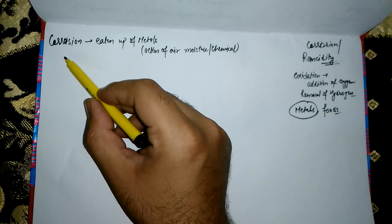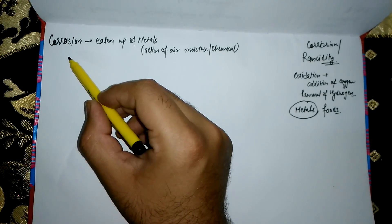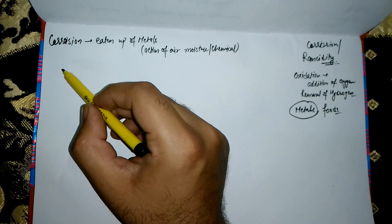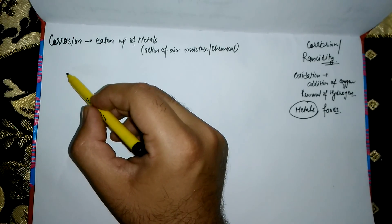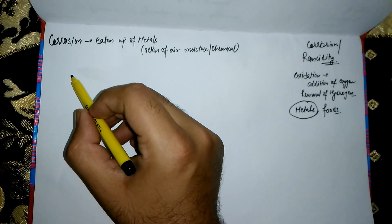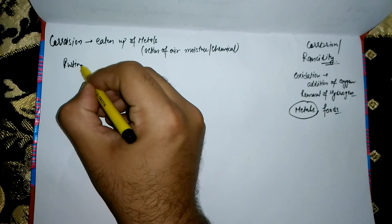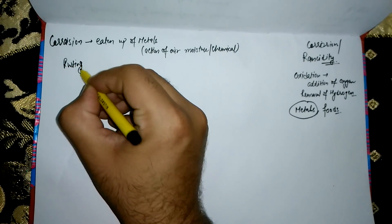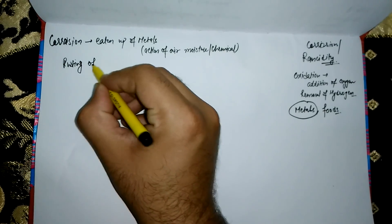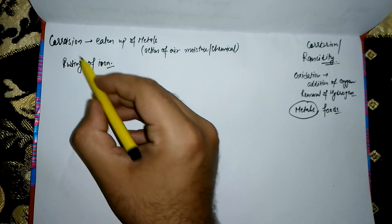Corrosion is basically caused by the oxidation of metals with the oxygen in air. Rusting of iron is the most common form of corrosion, and it is the best example we have seen in our daily life.